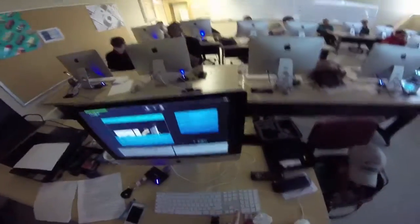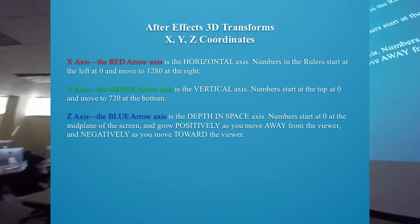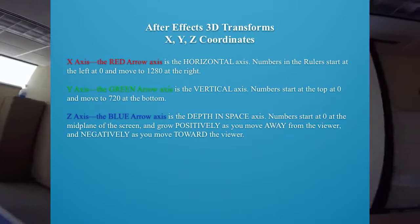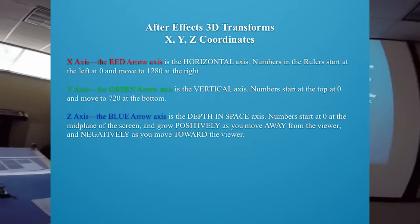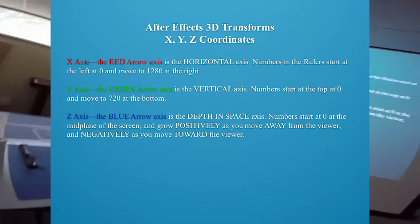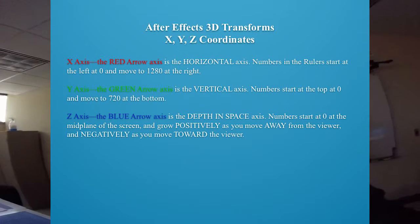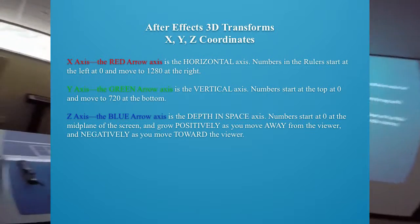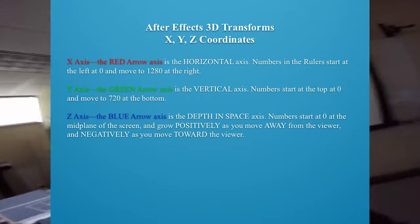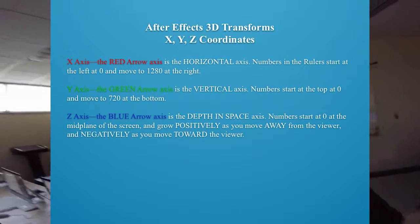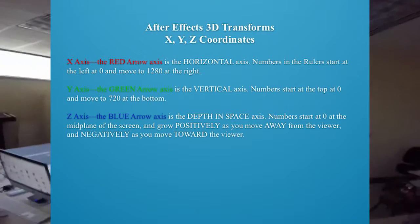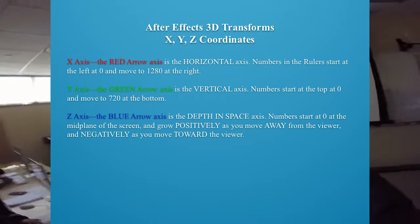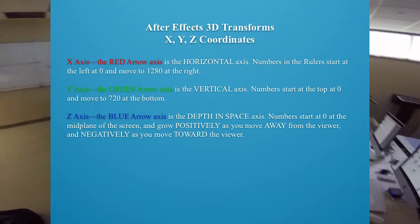I did several slides because I want to make sure you see it in different ways. For position transforms: the X-axis (red arrow) is the horizontal axis — use it to move objects left and right. The default center is at 640. The Y-axis (green arrow) is the vertical axis — 0 at the top, 360 in the middle, 720 at the bottom. The Z-axis (blue arrow) is depth — use it to move objects in front of or behind other objects, or to position lights and cameras.